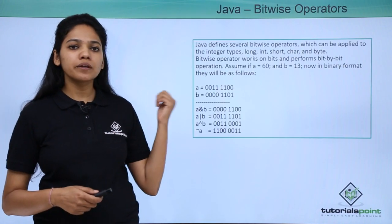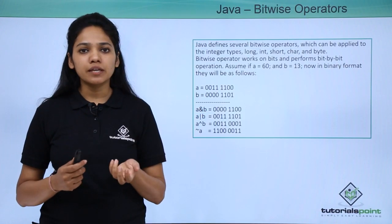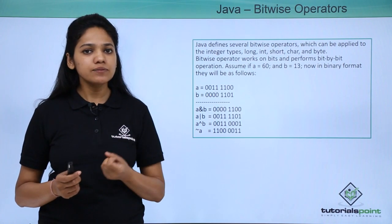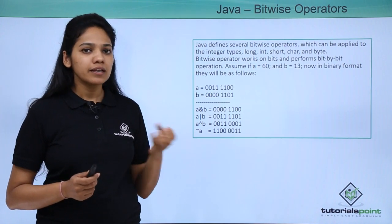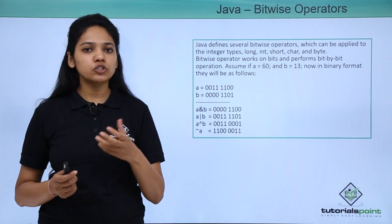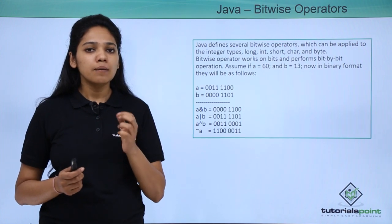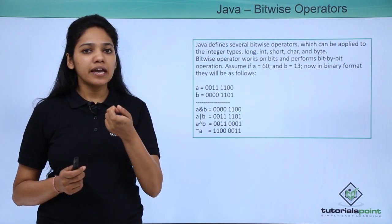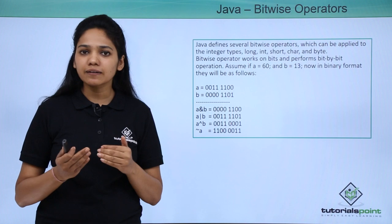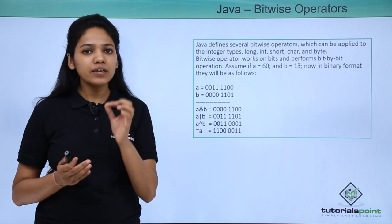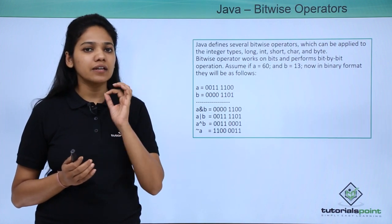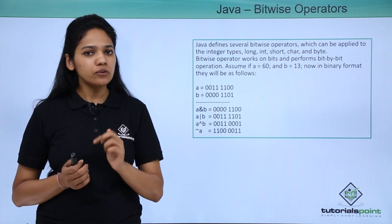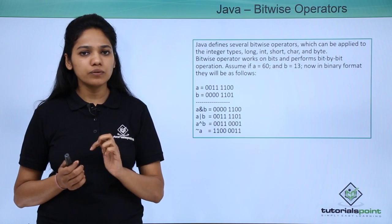The data types supported for bitwise operators are integer types: int, short, long, byte, and char. Char is included because, although it represents a character, every single character has a certain binary value associated with it. We have taken here an example of a and b with their binary values to demonstrate bitwise operations.